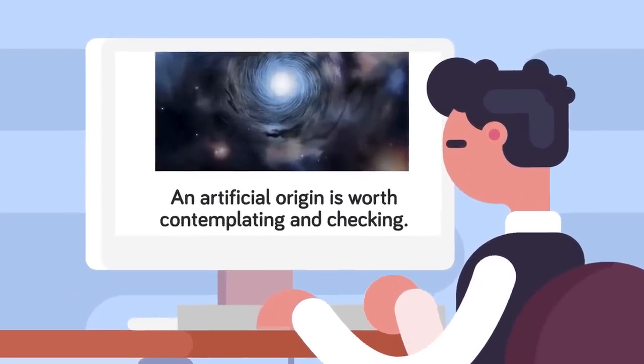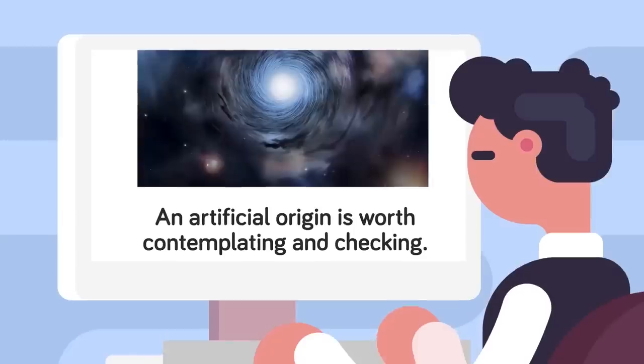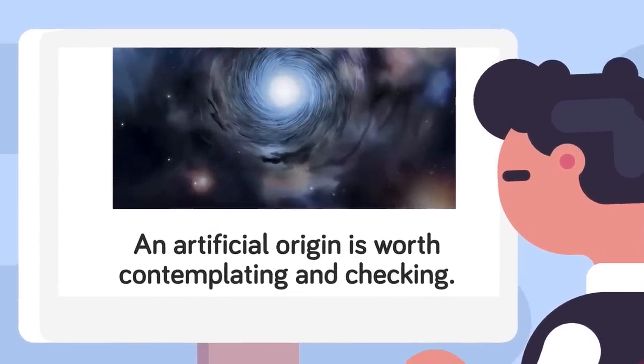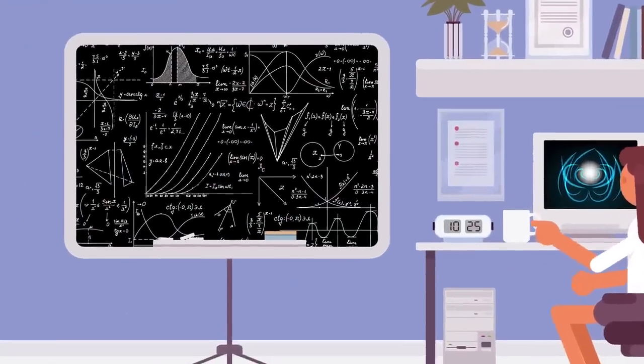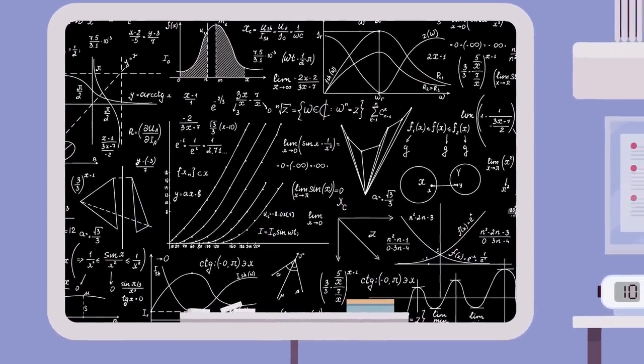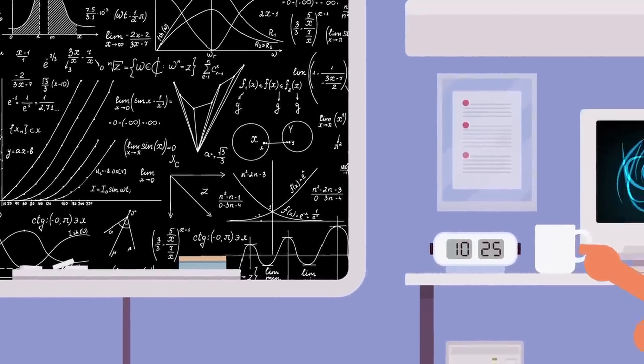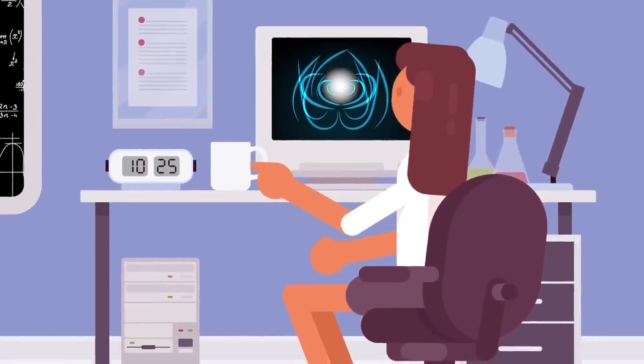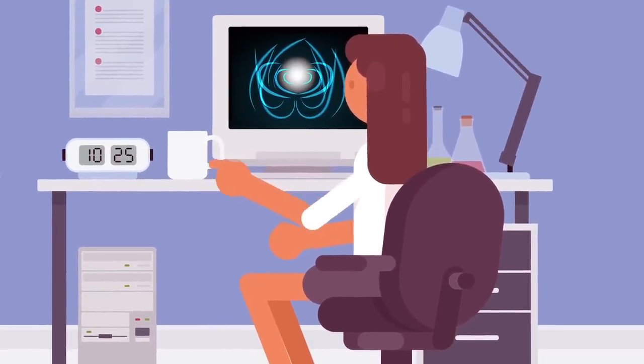and the discovery of a repeating FRB throws out a great deal of theories for a natural origin. Stopping well short of announcing the discovery of alien intelligence, scientists are still forced to seriously consider that the repeating transmissions cannot be of natural origin. One natural theory put forward though, claiming that the FRBs could be coming from a newly formed magnetar, a very quickly spinning neutron star with an extremely powerful magnetic field. While plausible, the theory fails to explain why the transmission only lasted for five hours though.